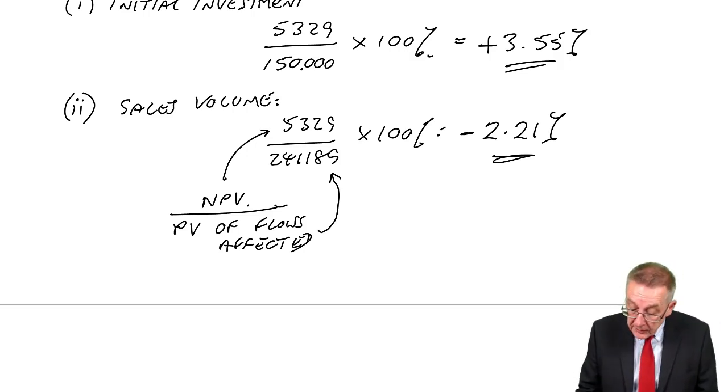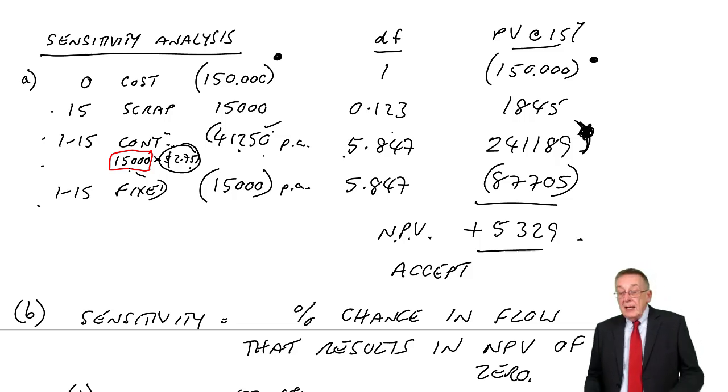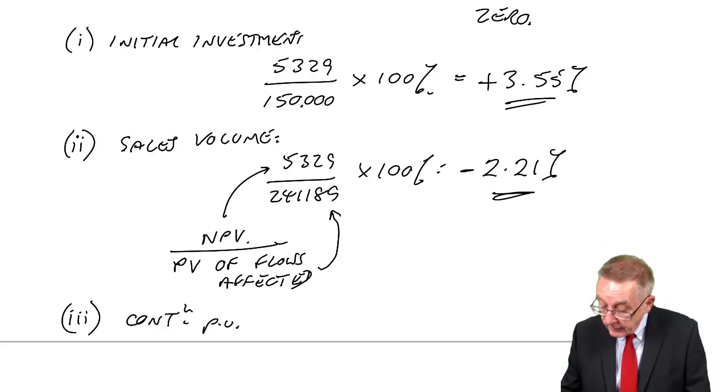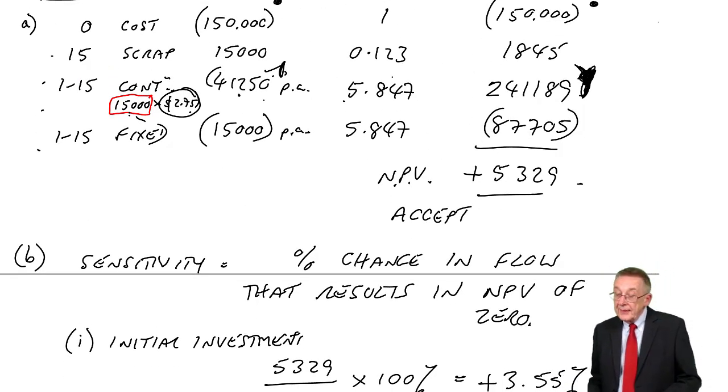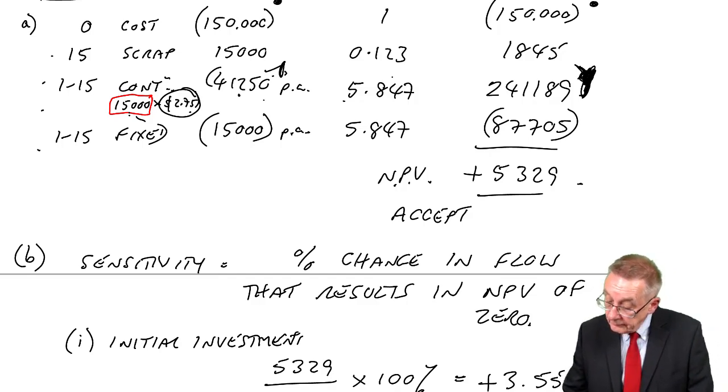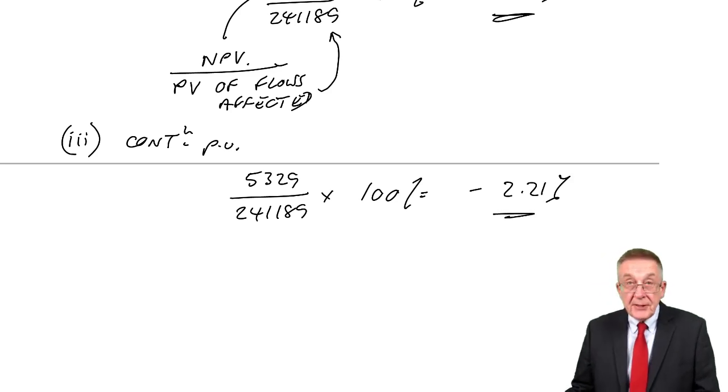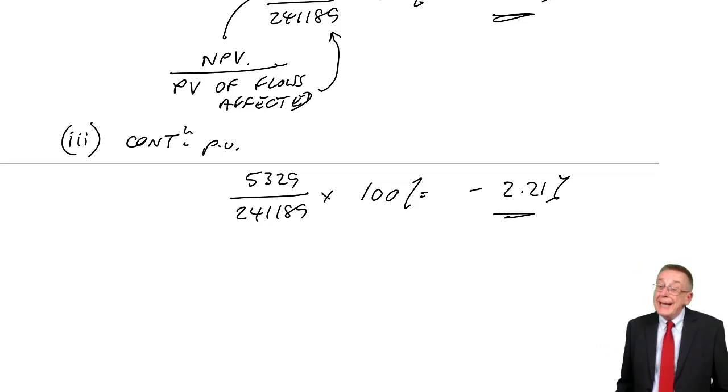Now we should be able to do the others very quickly. What about the contribution per unit? If contribution per unit changes, total contribution changes. If total contribution changes, the present value of the contribution changes. So again, it's the NPV of 5,329 divided by the present value of the flow that's affected, 241,189. So in fact the sensitivity is the same as for the sales volume. We're only worried if it falls, but if the contribution per unit fell by more than 2.21%, NPV will be negative.